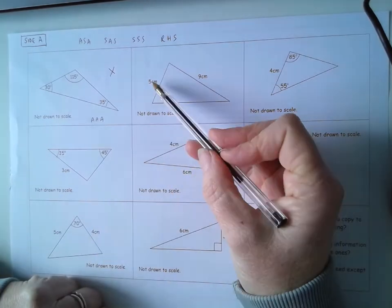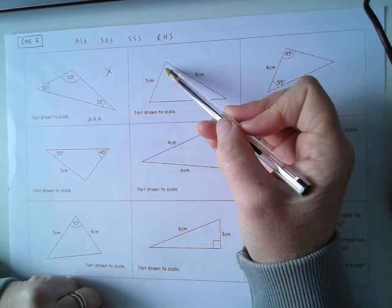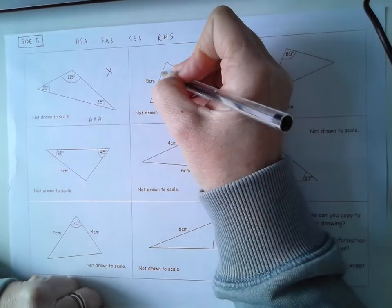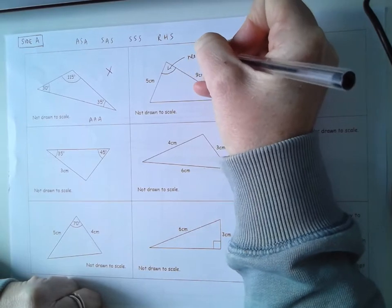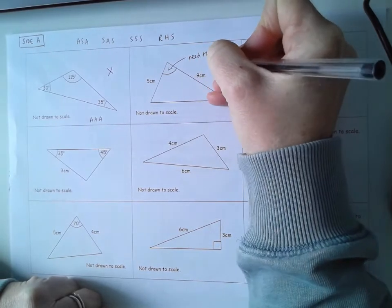This one here we have a side and a side but we have no angle here. We're lacking this angle here so we would need this in order to have side, angle, side. So we can't draw this one.